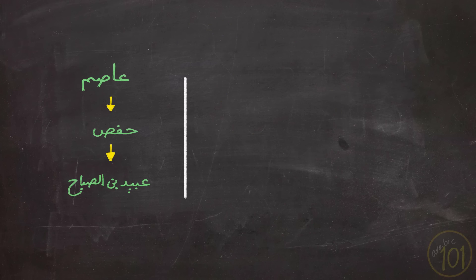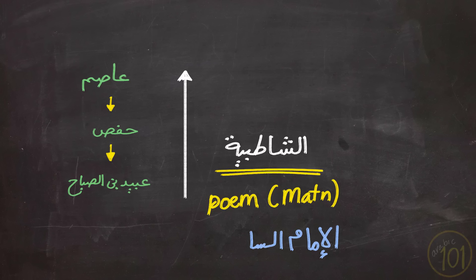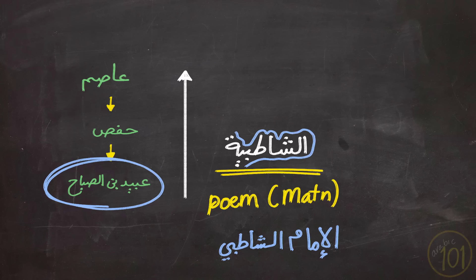The most famous tariq is that of Ash-Shatubiyya. It is called Ash-Shatubiyya because it is taught using a poem made by Al-Imam Ash-Shatubiyya, and it teaches the tariq of Ubaidu ibn al-Sabbah. But it is famous for being called Ash-Shatubiyya.